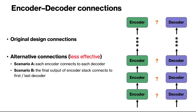In this video we want to discuss the connections between the encoder and decoder layers in the transformer. First we will see the connections in the original design, and then we will consider some alternative and less effective connectivity schemes and discuss why these are not as effective as the original connectivity pattern. This discussion will help us understand the reasons for the original design.